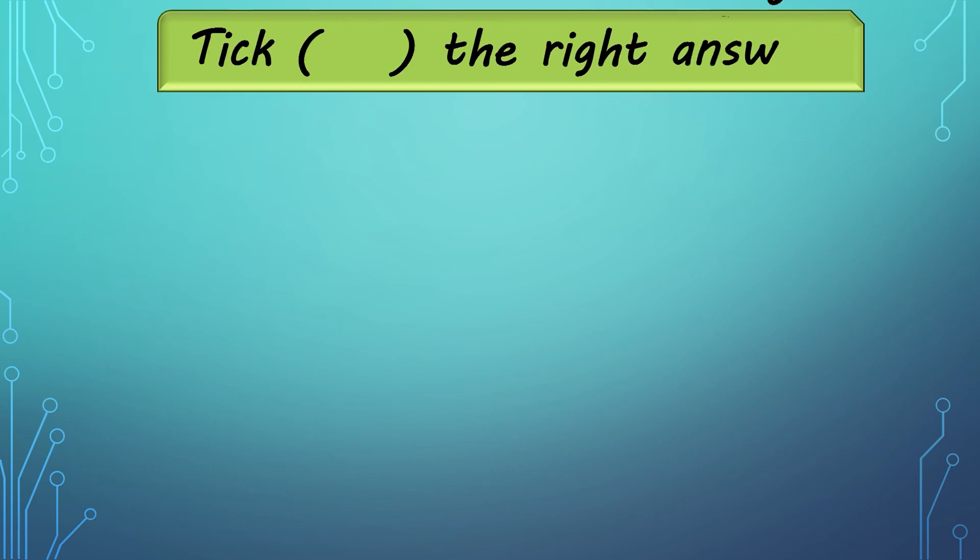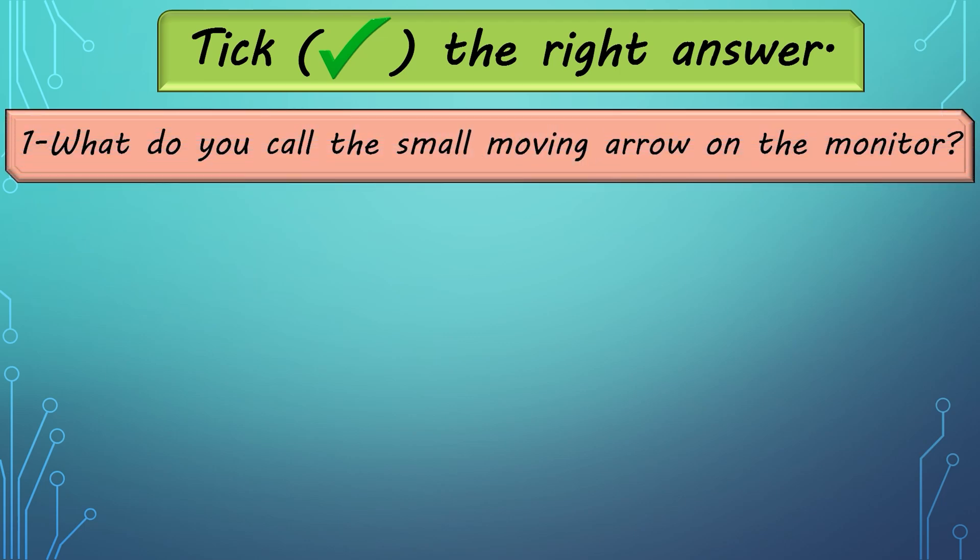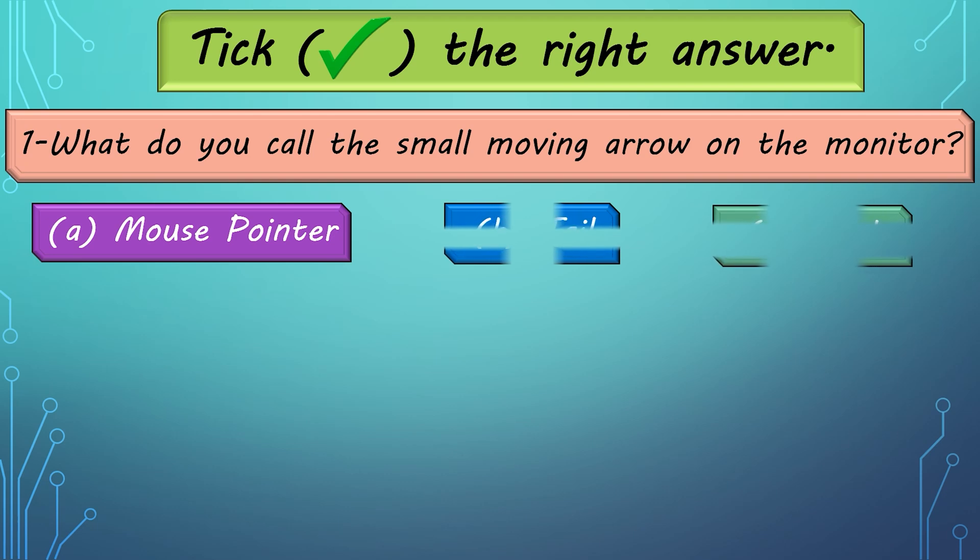Tick the right answer. Number 1: What do you call the small moving arrow on the monitor? Options are: A. Mouse Pointer. B. Tail. C. Stick.